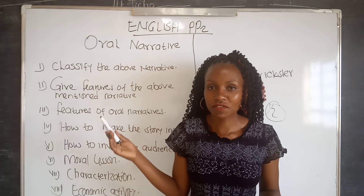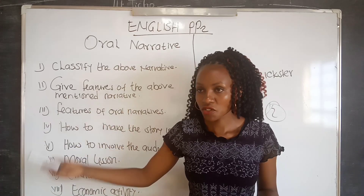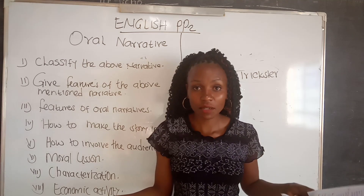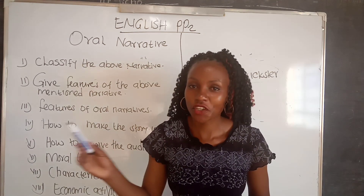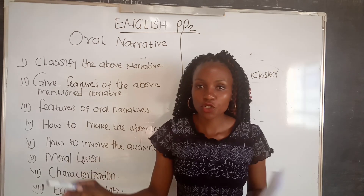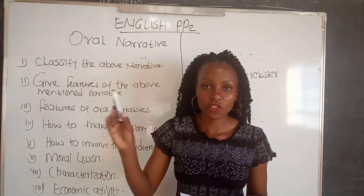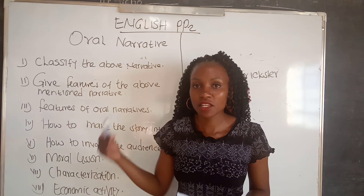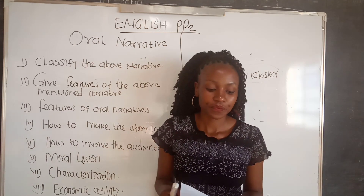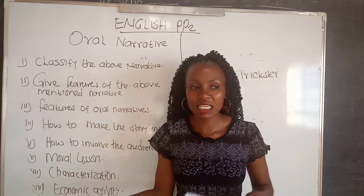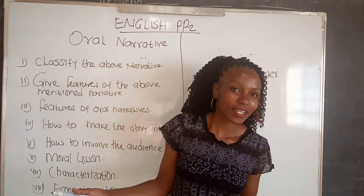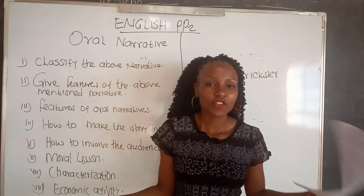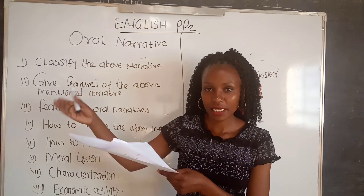The first feature is personification — check if there is personification in the story. This is whereby non-living beings or animals are given the characteristics of human beings; for example, animals talking in a narrative. Second, we have the use of songs — if there is any song in the narrative, that is a feature. We also have the opening formula, e.g. 'once upon a time' or 'long time ago,' and the closing formula, e.g. 'my story ends there' or 'they lived happily ever after.'